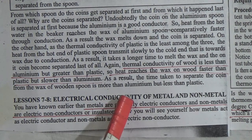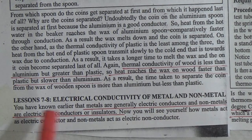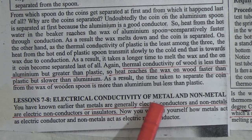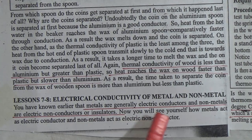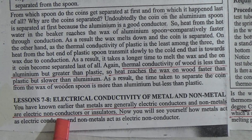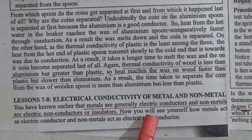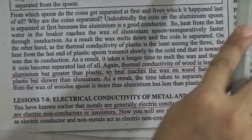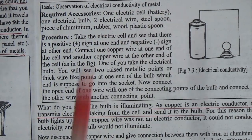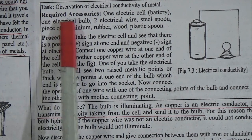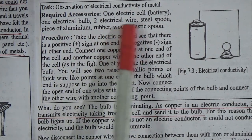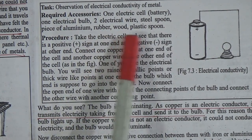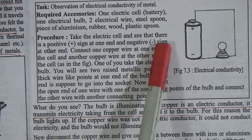Electrical conductivity of metal and non-metal: metals are generally electric conductors and non-metals are electric non-conductors or insulators. To observe electrical conductivity, required accessories include: one electric cell (battery), one electrical bulb, two electrical wires, a steel spoon, a piece of aluminium, rubber, wood, and a plastic spoon.